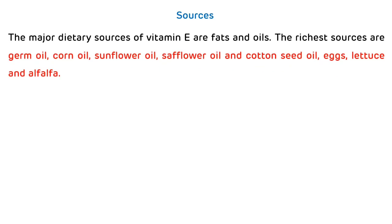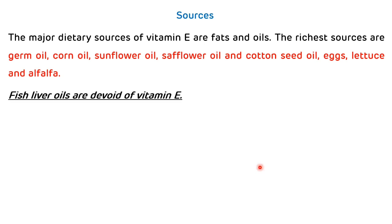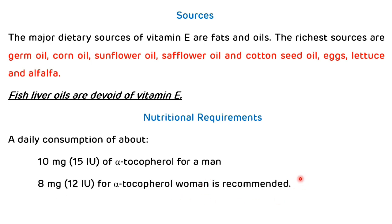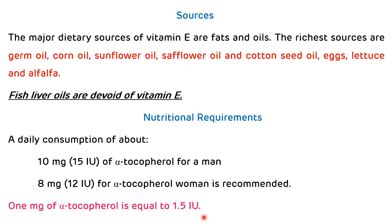The major dietary sources of Vitamin E are fats and oils. The richest sources are wheat germ oil, corn oil, sunflower oil, cottonseed oil, eggs, and leafy vegetables. Fish liver oils are devoid of Vitamin E. The recommended daily allowance is about 10 mg of alpha-tocopherol for males and 8 mg for females. One mg of alpha-tocopherol equals 1.5 international units.